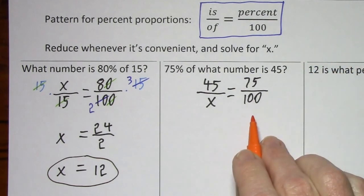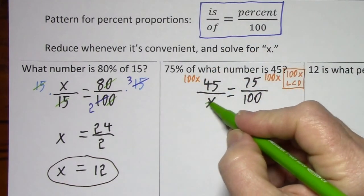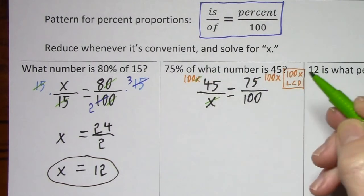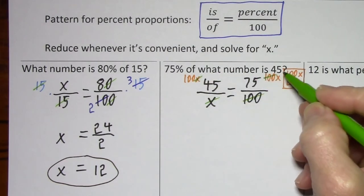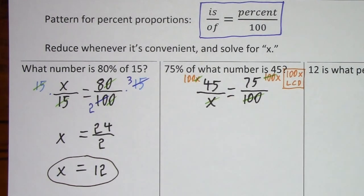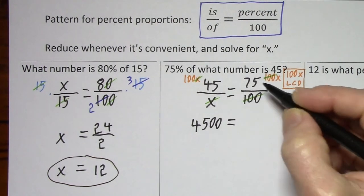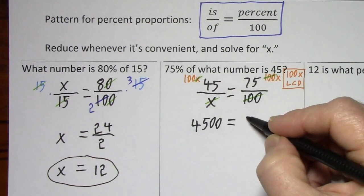So let's clear this of fractions. Again, the least common denominator is 100X. So you multiply each term on each side by 100X. The X's cancel. The 100's cancel. So this gives us 100 times 45, or 4500. Bring down your equals. 75X.